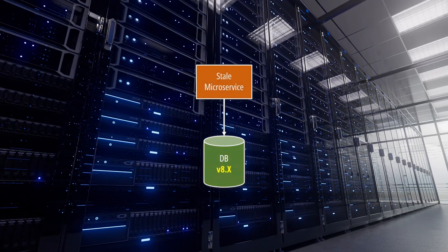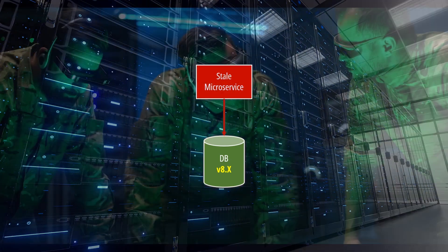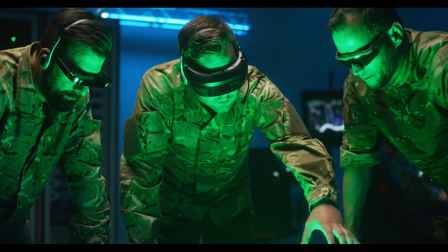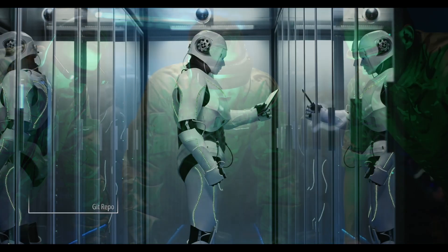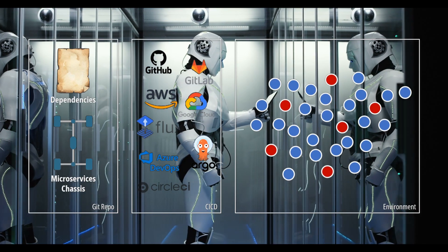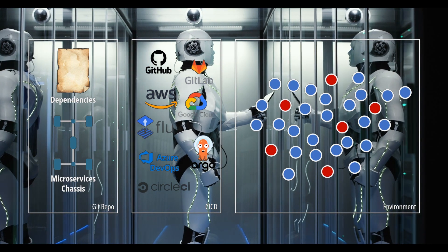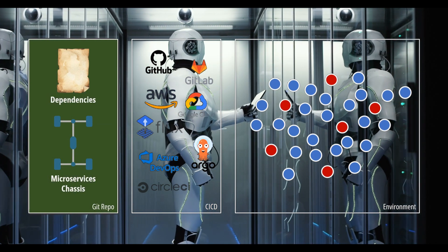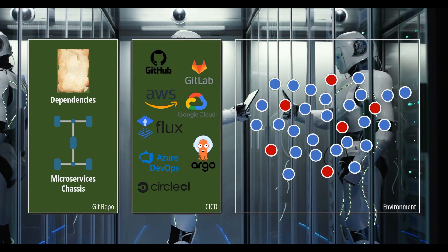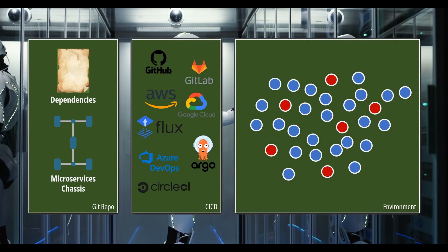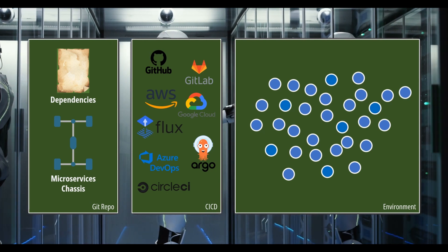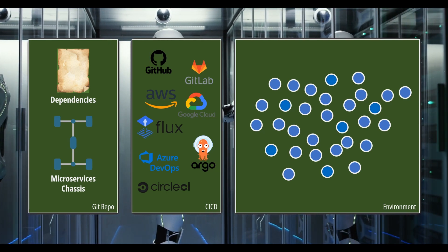We upgrade a database and we start seeing errors. That means we need to devise a strategy to constantly update our microservices. One option is to use centralized dependency control and smart CI/CD pipelines. We can define all dependencies in a common manifest and trigger a full rebuild when they are updated. Obviously, we need also automated testing and a solid zero-downtime deployment strategy.